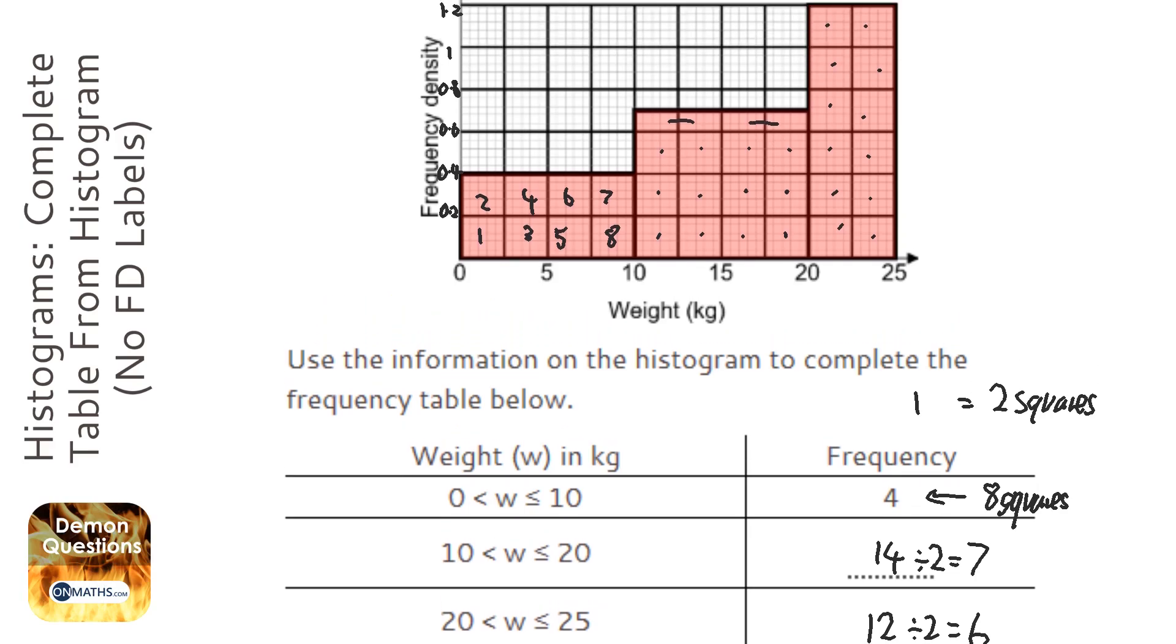Now I could have just read off from the frequency density thing that I've come up with. So the next one would be 0.7. The height of 0.7, the class width is 10. So times them together and that gives me 7. And 1.2 times 5, which is 6. So either way, you get the right answer.